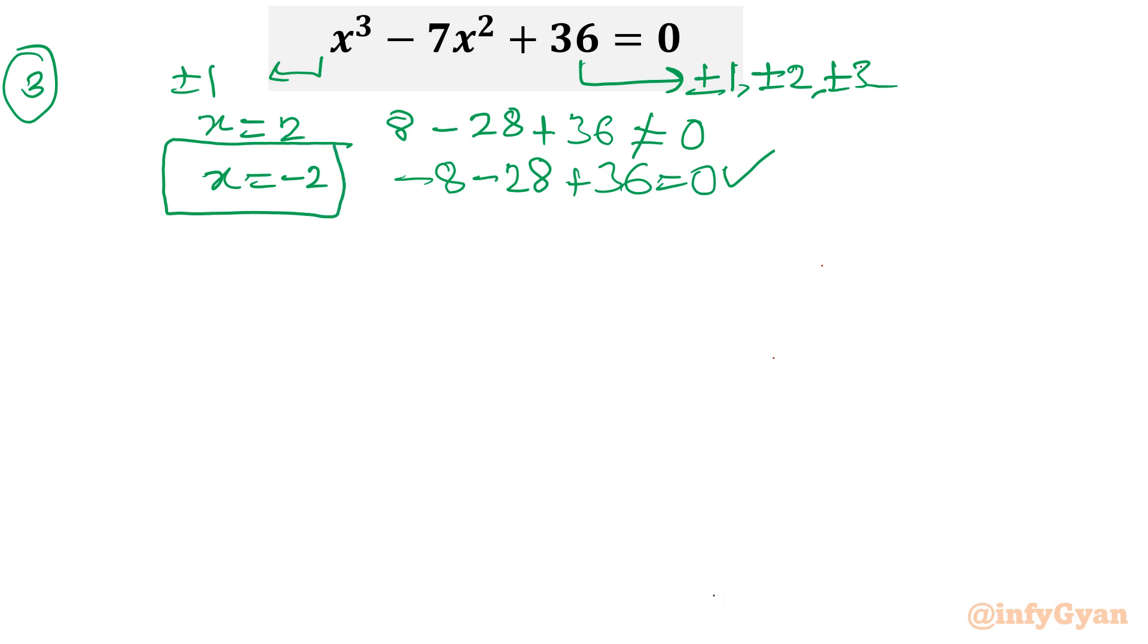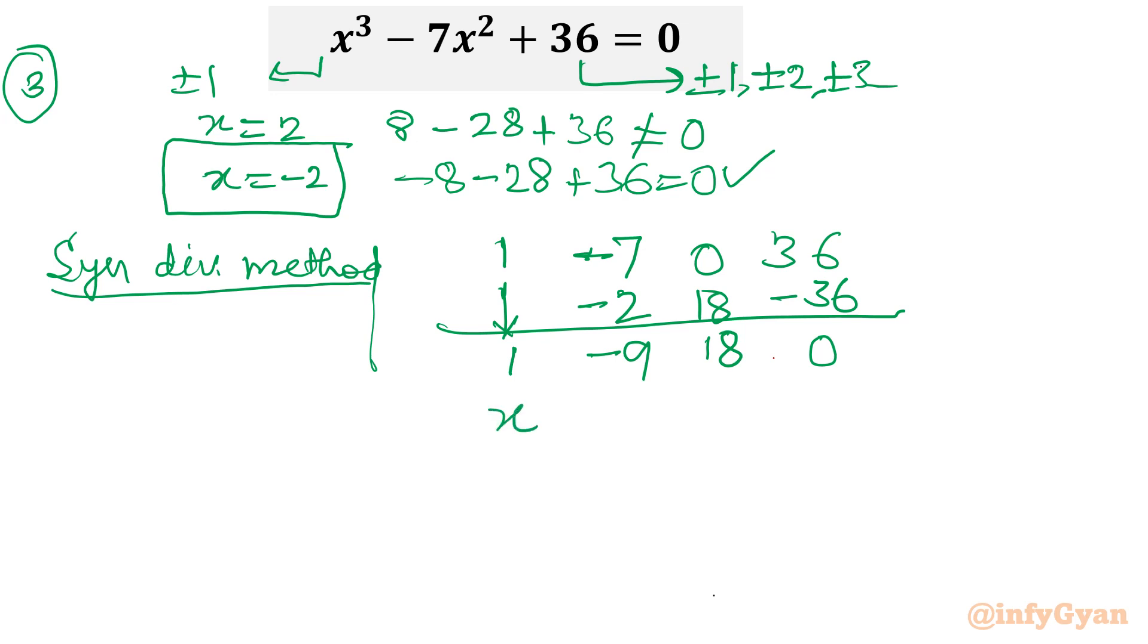Now I will quickly apply synthetic division method. Let me write all coefficients: 1, -7, 0, 36. Leading coefficient as is: 1; times -2: -2; -9, 18, 18, -36, 0. This is the coefficient of the quadratic equation: x² - 9x + 18 = 0.